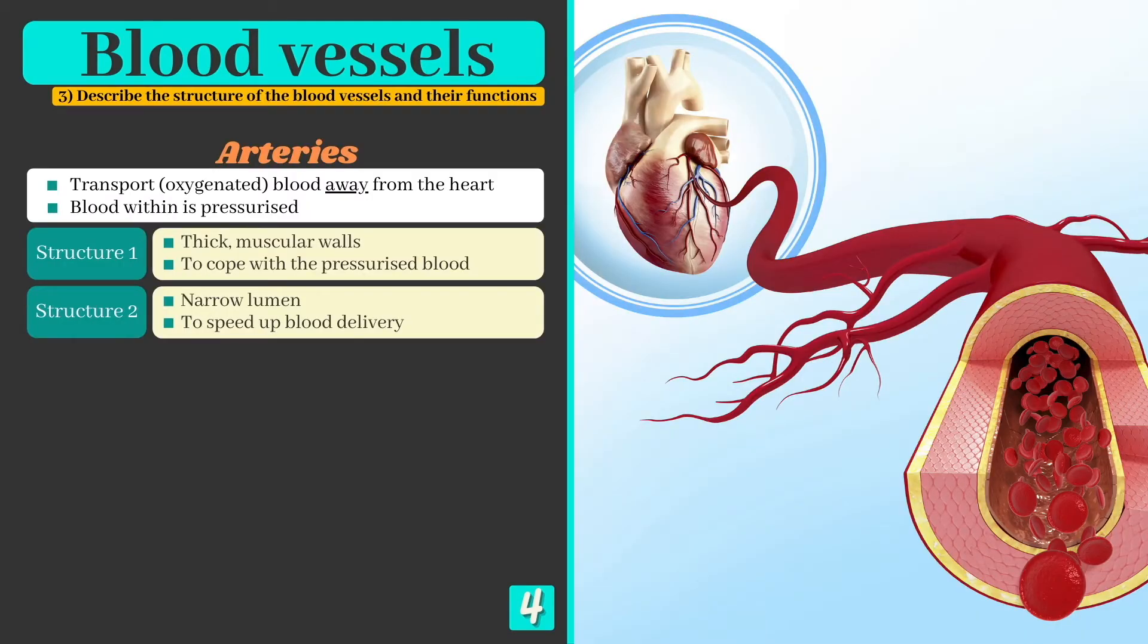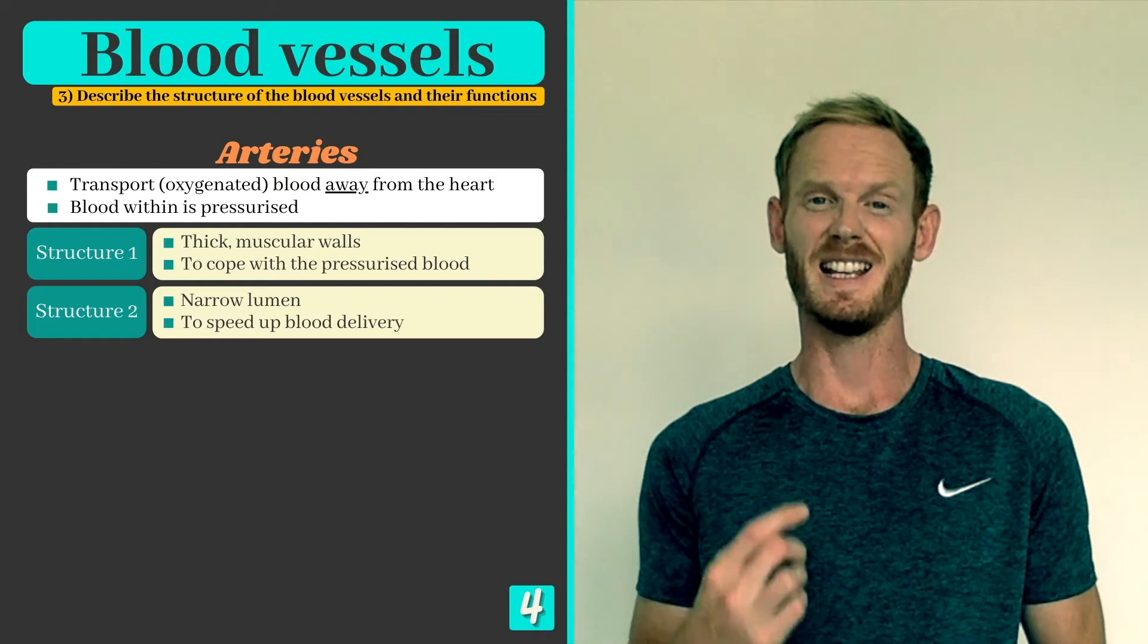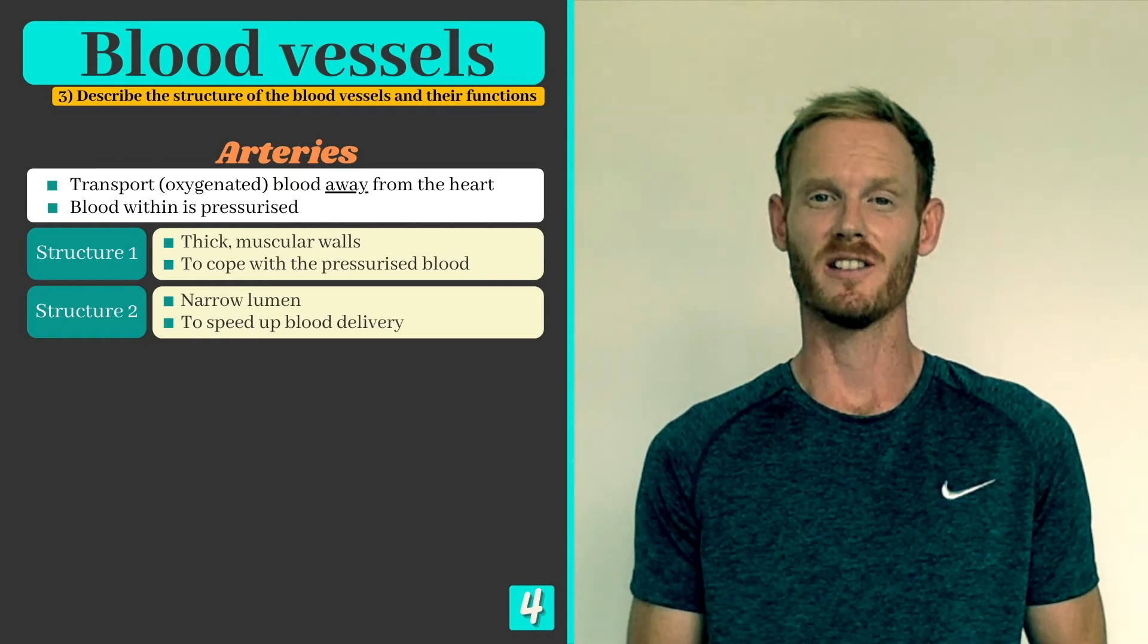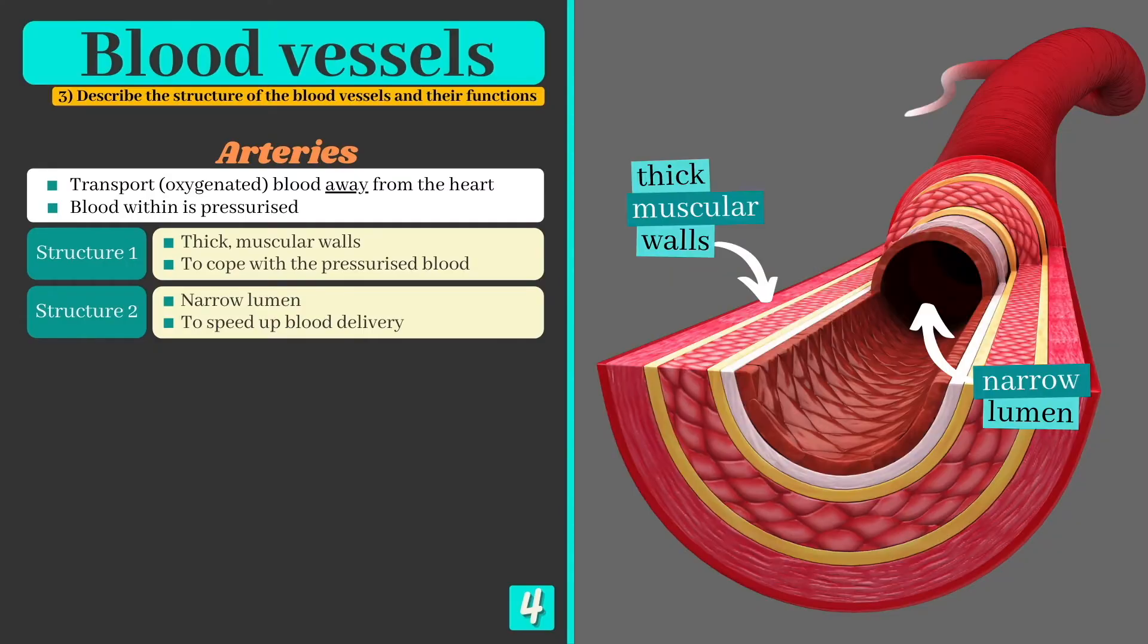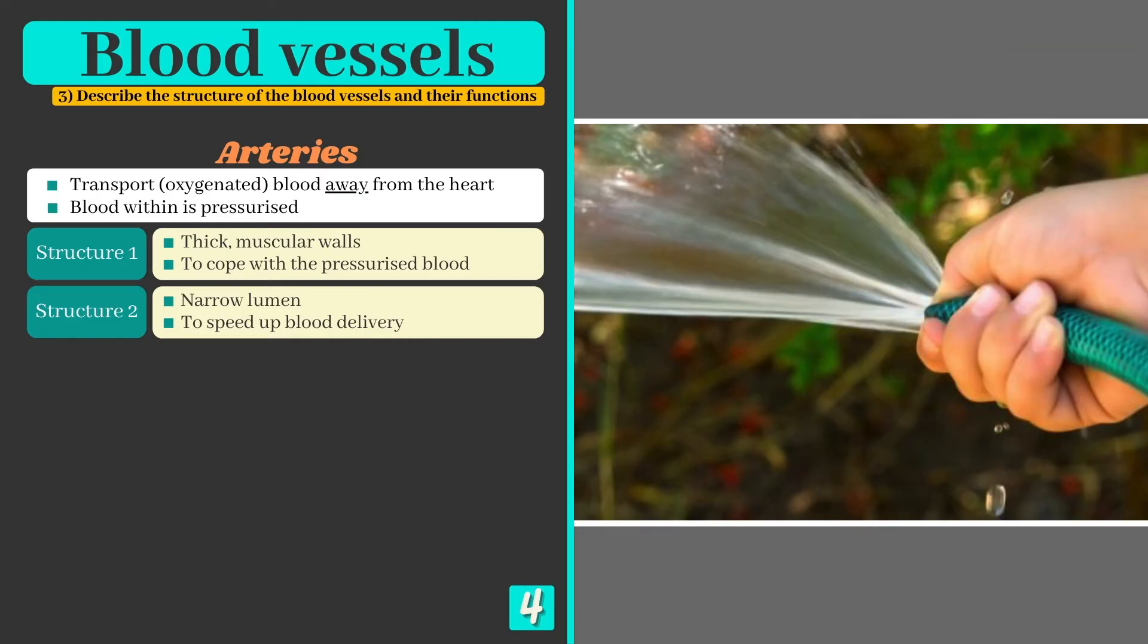We'll take a look at the arteries first, which transport typically oxygenated blood away from the heart. Every time the heart beats, it forces blood into the arteries at high pressures, enabling the blood to reach even the most distant tissues. Arteries therefore have thick muscular walls to cope with this pressure, while the lumen or space within the vessels is narrow, increasing the efficiency of blood transportation.